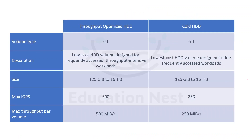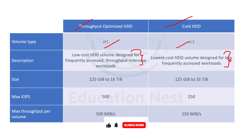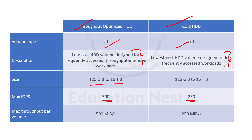For HDD we have two options. Throughput Optimized HDD (ST1) is designed for throughput-intensive workloads, and Cold HDD (SC1) is the lowest cost EBS volume available, used for least frequently accessed workloads. The size of ST1 starts from 125 GB and goes up to 16 TB. The IOPS is drastically reduced because HDD is more about throughput.